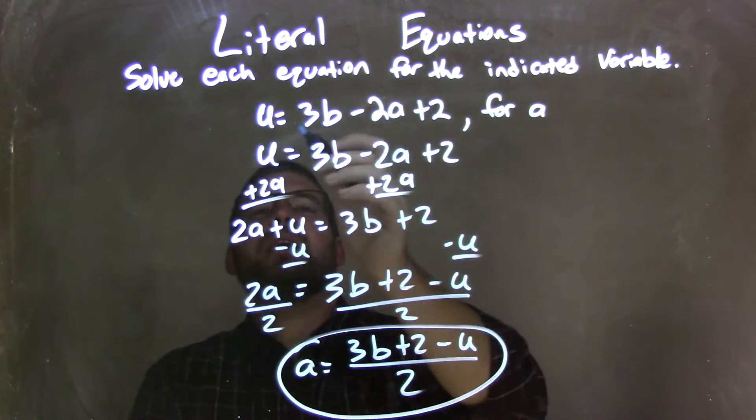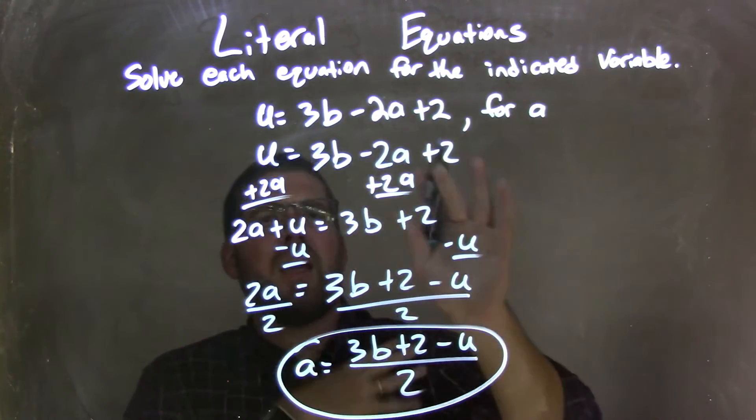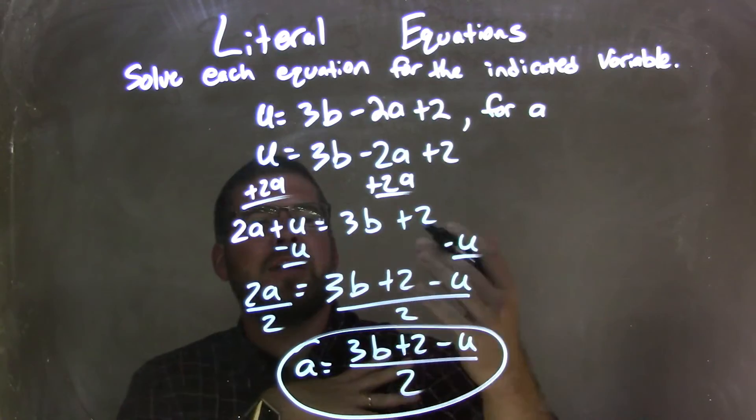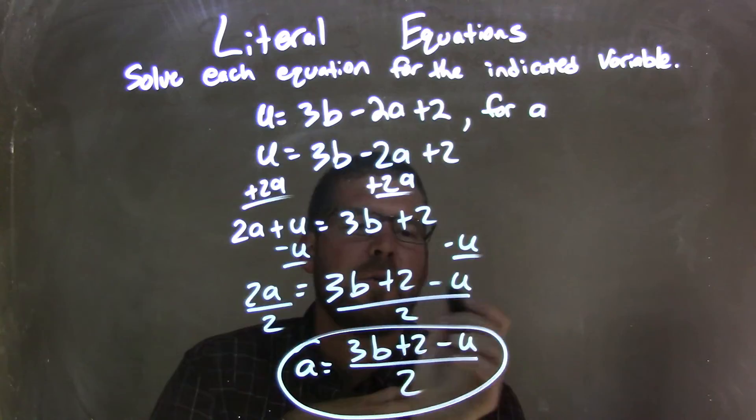So let's recap. We have u equals 3b minus 2a plus 2. We're solving that for a. I brought my 2a to the right, and I brought my u to the left, and that gave me 2a equals 3b plus 2 minus u.